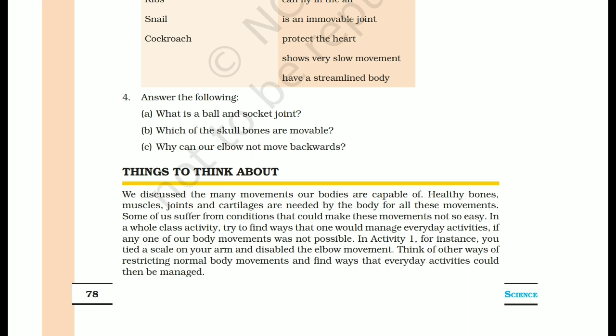The rounded end of one bone fits into the cavity of another bone — such a joint allows movement in all directions. This is the ball and socket joint, found at the waist and shoulder.